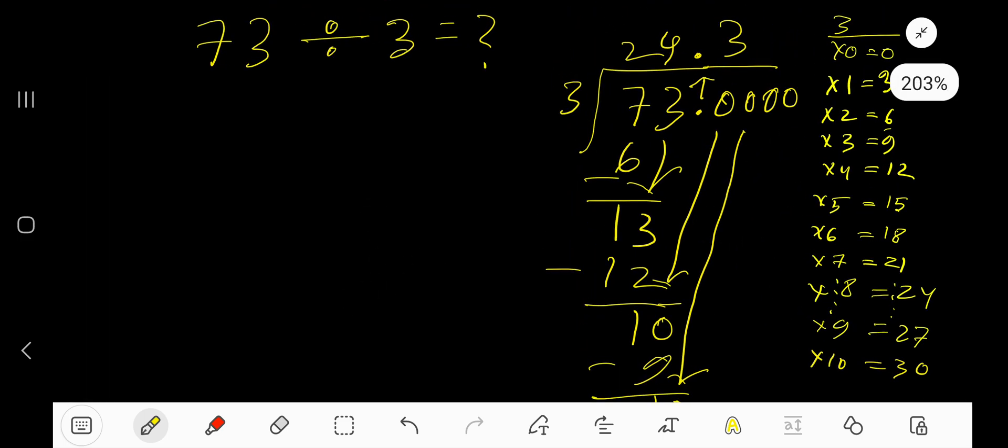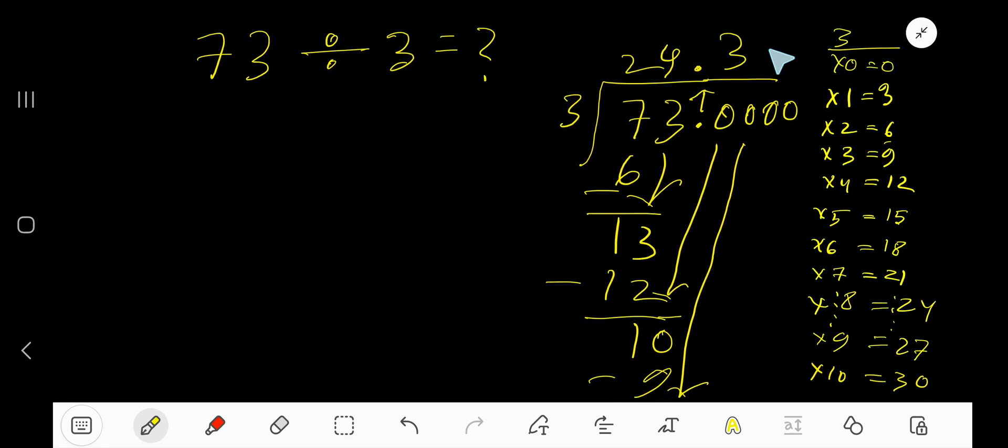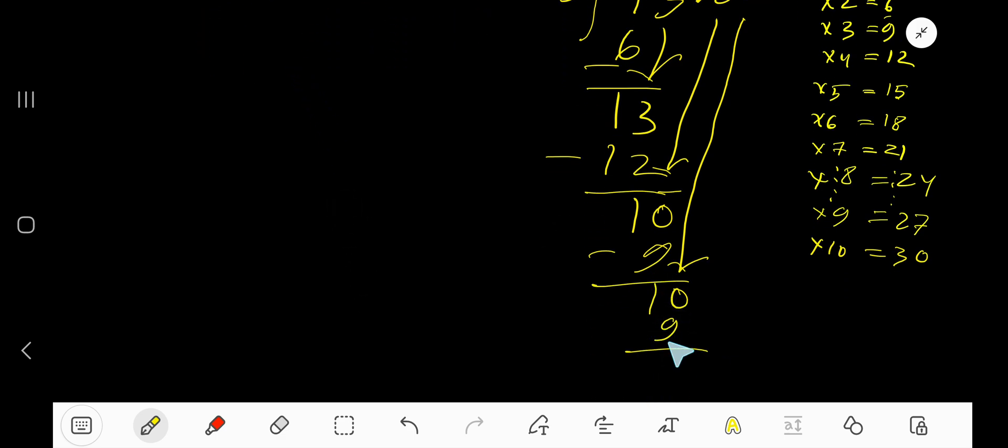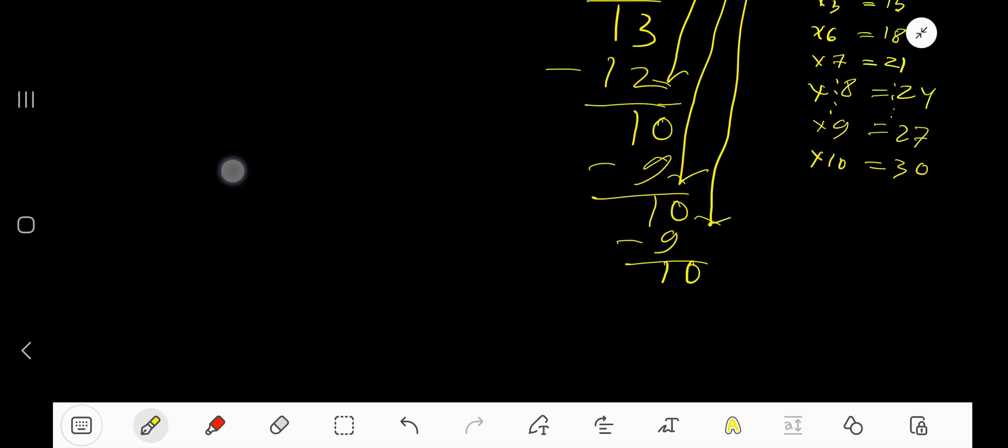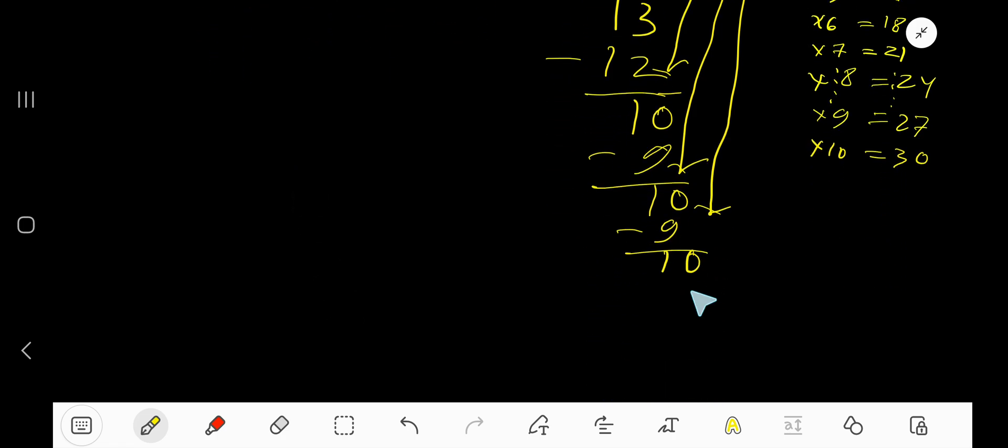So you are getting 10 again. So 3 goes into 10 how many times? 3 goes into 10 again 3 times. So 3 times 3 is 9. Subtract to get 1, you can bring down more zeros.